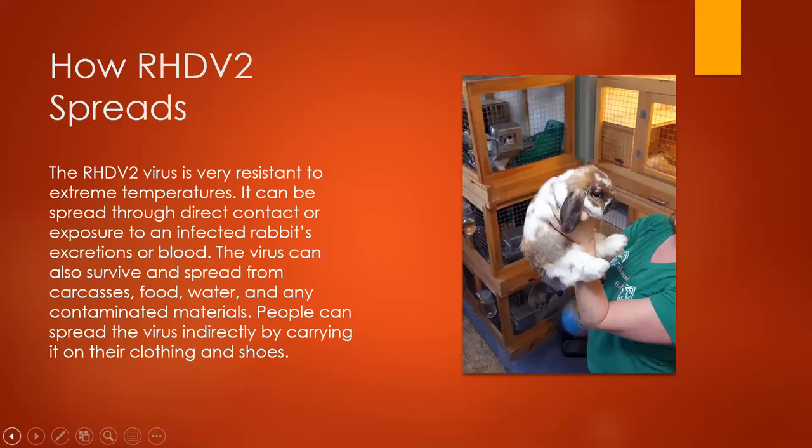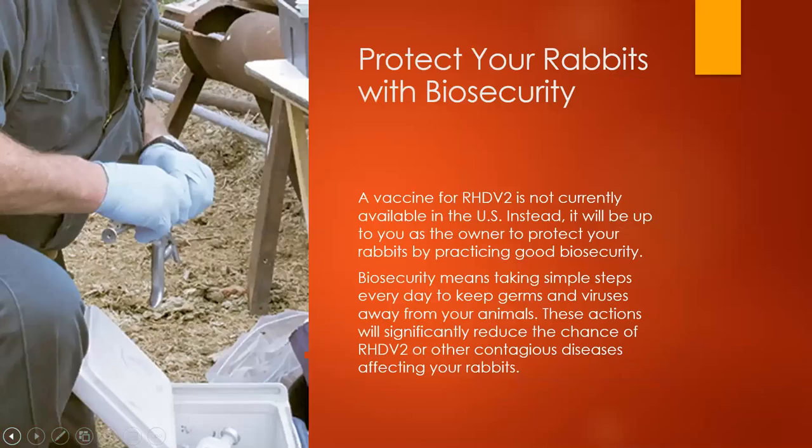The RHDV-2 virus is very resistant to extreme temperatures. It can be spread through direct contact or exposure to an infected rabbit's excretions or blood. The virus can also survive and spread from carcasses, food, water, and any contaminated materials. People can spread the virus indirectly by carrying it on their clothing and shoes.